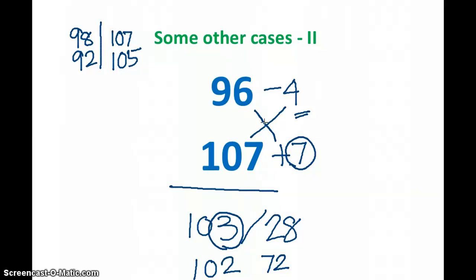Then we have done either 96 plus 7, which gives 103, or we have done 107 minus 4, which also gives 103. So we got this number also. The next step is that since both the numbers here are on two different sides of the base, we cannot just add it or we cannot just keep it like that.